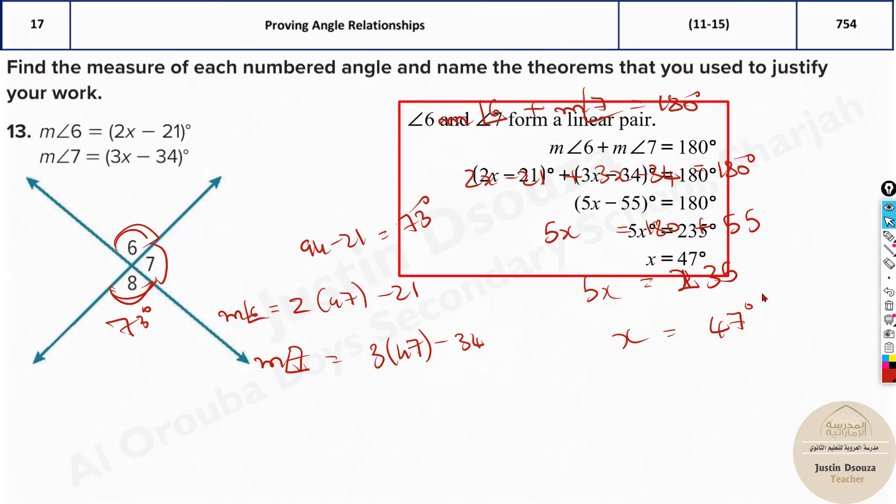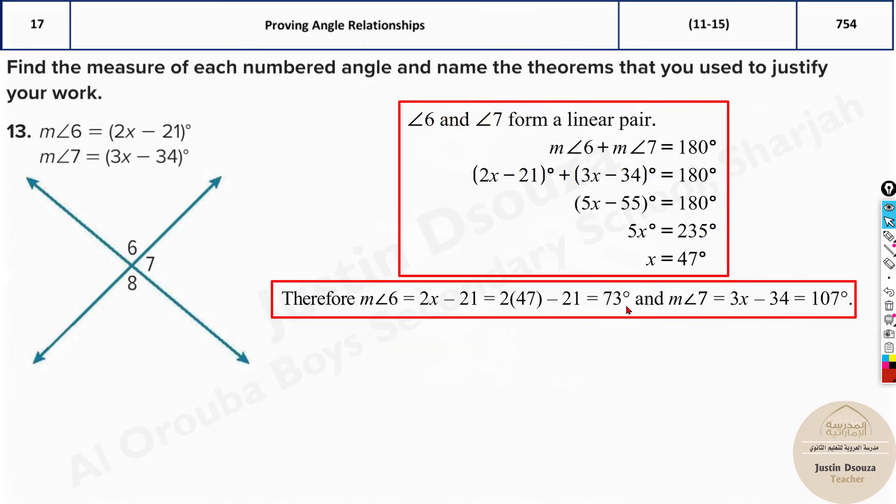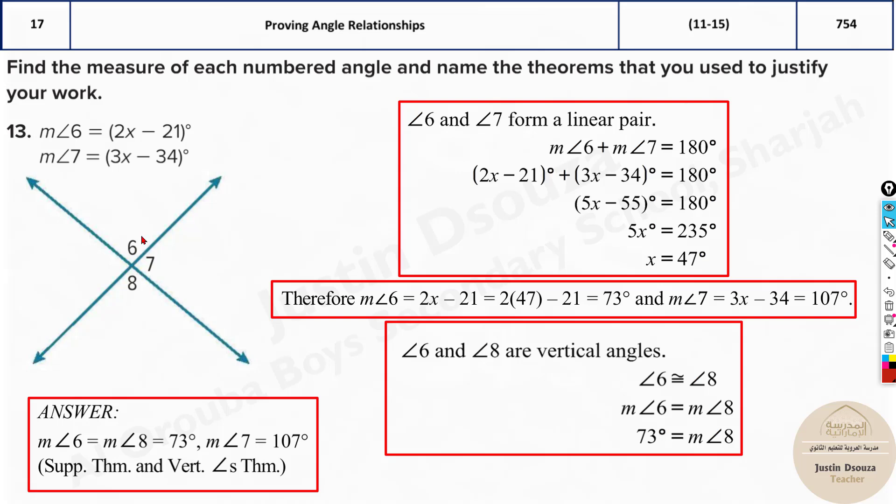So it doesn't matter, the measure of 6 will be equal to 8 as well. So here we got 47 degrees as x, and then we measured 6 as 73 degrees, and over here 7 as we will get it as 107. Now remember, since they are vertical angles, the above ones are linear pairs when you add them up. Since these are vertical angles they both are equal, so the measures for 6 and 8 are equal at 73 degrees, and for 7 it's 107.